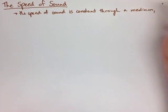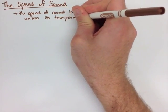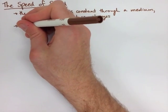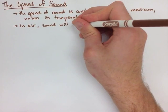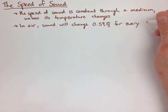If the temperature changes, we're actually changing what the medium is, and that's going to change the speed of sound. In air, in an everyday environment, the speed of sound will change 0.59 meters per second for every degree Celsius that we change the temperature.